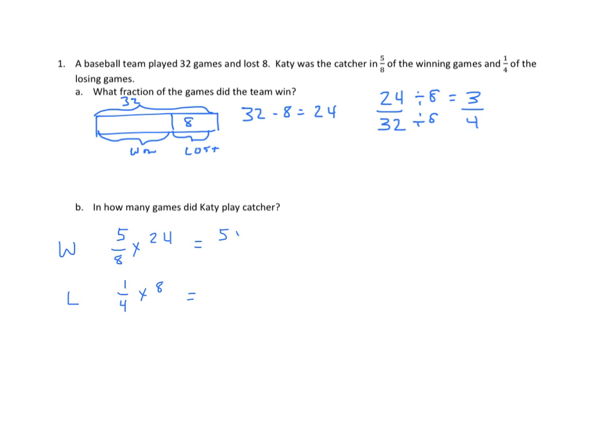This is the same as five times 24 divided by eight. We can divide both 24 and eight by eight. And we have five times three is 15 winning games she played in. And losing games, we have one times eight divided by four. And we end up with two losing games. So we find the sum of the winning games and the losing games where she played catcher. And we get 17.